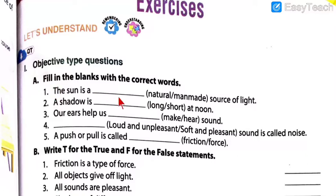Question one: The sun is a dash source of light. Options: man-made or natural. Which source of light is the sun — is it made by man or by nature? Question two: A shadow is dash at noon — long or short. How is the shadow during noon time? The picture related to the shadow was given — it was very easy. Try to find out the answer. In this lecture the format is: write the question and answer; I will give answers for all five together.